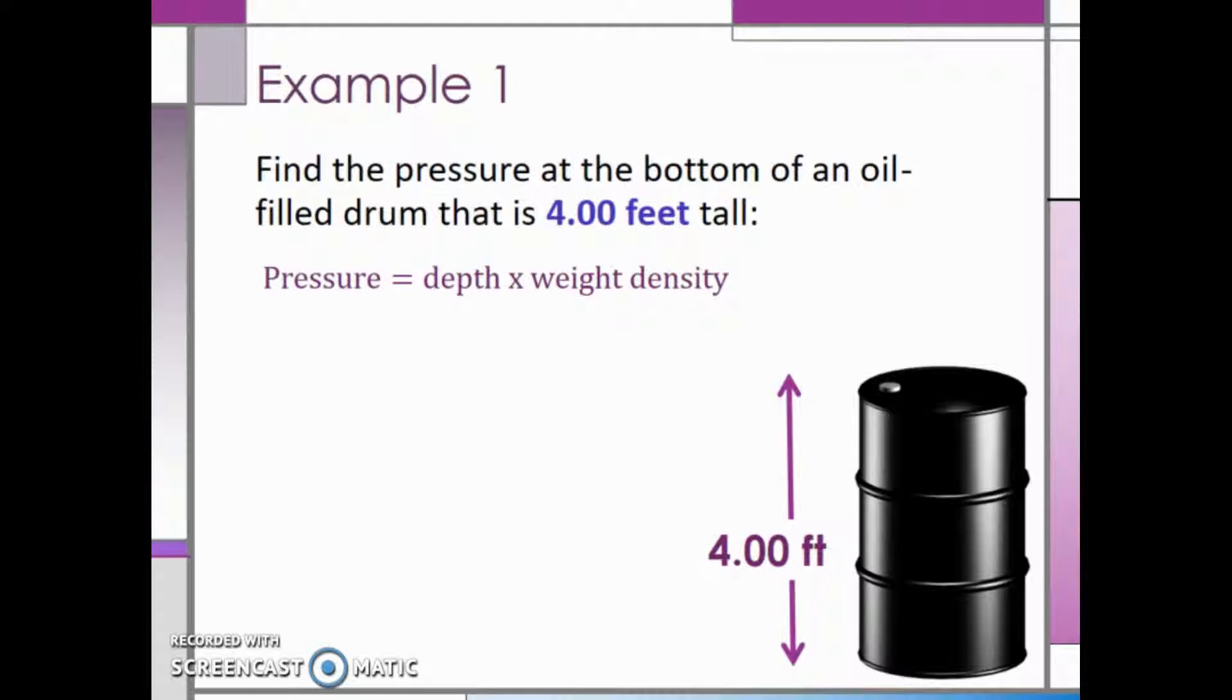So our depth is 4 feet, and the weight density will need to be found from the table that we looked at in the last lecture. We will need to find the weight density in English units, since we have the depth of 4 feet. So looking at the table, the weight density of oil is 54.2 pounds per cubic foot.